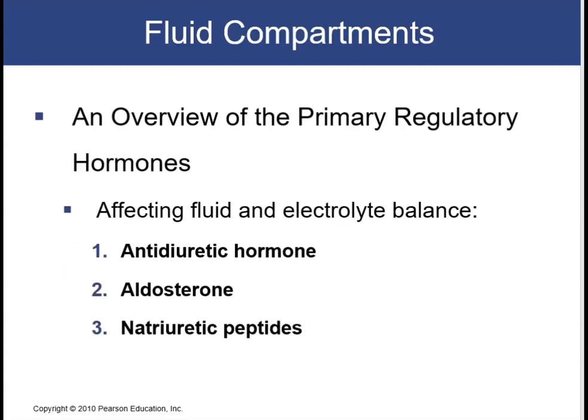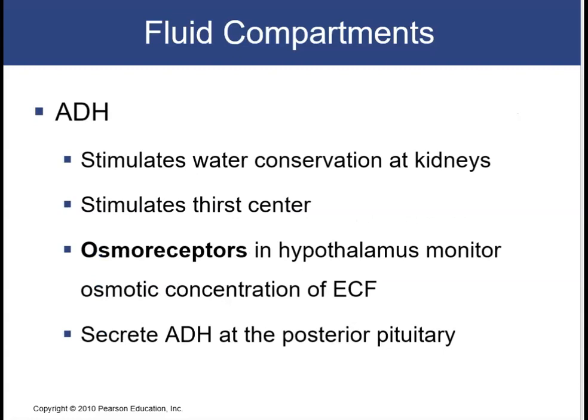We're going to revisit a couple of hormones that have a very important effect on both fluid and electrolyte balance in the body. These include antidiuretic hormone, aldosterone, and the natriuretic peptides. Antidiuretic hormone will stimulate water conservation at the kidneys — causing the kidneys to hold on to water and not dump it in the urine. ADH will also stimulate your thirst center.